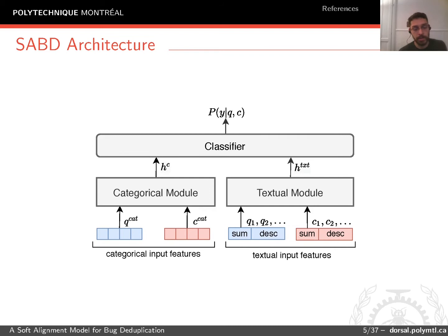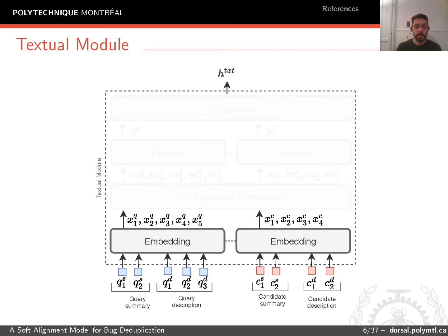This is the architecture of our model. It has two modules: the categorical module and the textual module. The categorical module compares the categorical data of the two reports, while the textual module processes the textual data of the query and the candidate. The classifier receives the outputs from these two modules and outputs the probability of Q being a duplicate of C. In this presentation, we're going to focus on the textual module, as you can find more information about the categorical module in the paper.